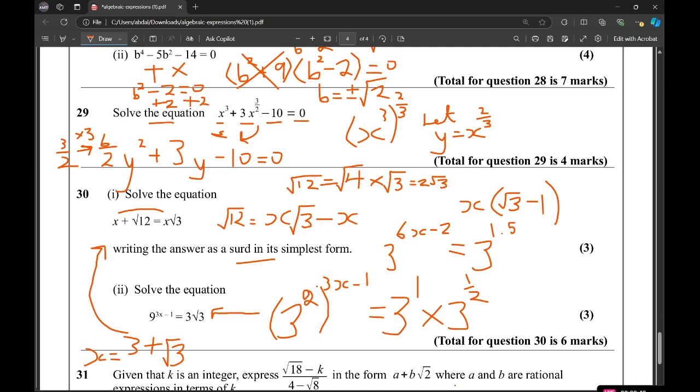I'm now going to compare the powers of 3. So we've got 6x minus 2 equals 1.5. Add 2 to both sides, and then divide by 6. So we're going to have x equals 3.5 over 6.